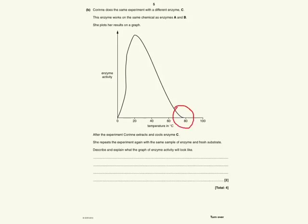She then takes it out and cools it right back down to begin the experiment again. She takes the same sample of enzyme that was used at this high temperature and adds fresh substrate so that won't be a limiting factor. The question is to describe and explain what the graph of enzyme activity will look like.